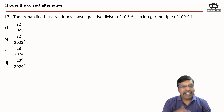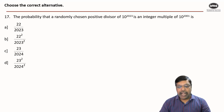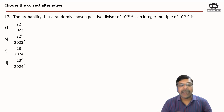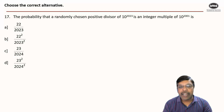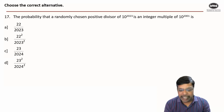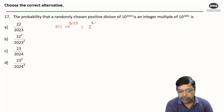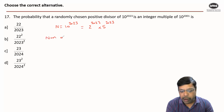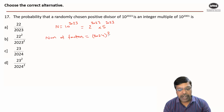Question number 17 is indeed a frequently seen type of question. We need to find the probability that a randomly chosen positive divisor — which is nothing but a factor of 10^2023 — is an integer multiple of 10^2001. First of all, let us calculate how many factors 10^2023 has. 10^2023 can be prime factorized as 2^2023 × 5^2023. Hence, total number of factors is equal to 2024 × 2024, that is 2024 squared.